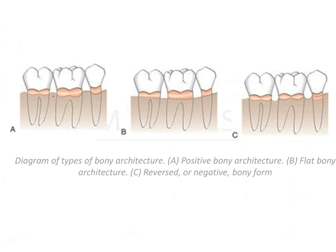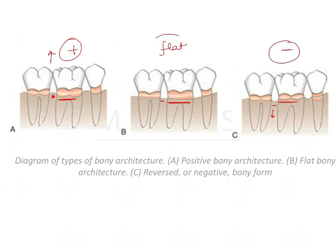Looking at these images, the interradicular bone is above or more coronal compared to the radicular bone — that is positive architecture. In the third image, the interradicular bone is below or apical to the radicular bone — that is negative architecture. Where the interradicular bone and radicular bone are at the same level, that is flat architecture.